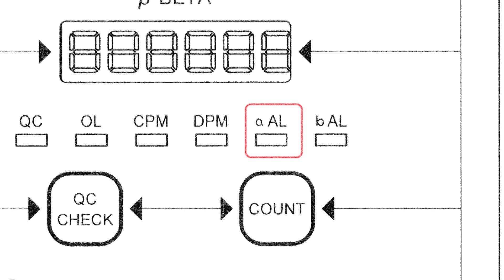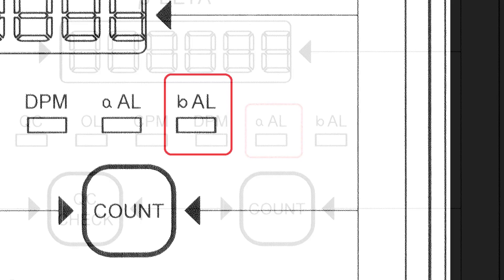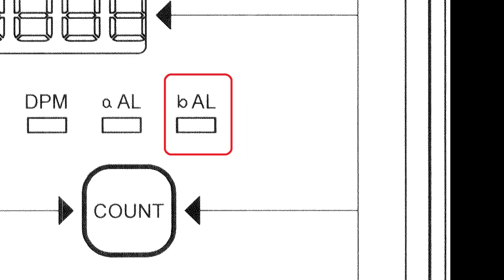An alpha alarm light which is a red LED indicator that illuminates whenever the alpha count exceeds the alarm level. A beta alarm light which is a red LED indicator that illuminates whenever the beta count exceeds the alarm level.